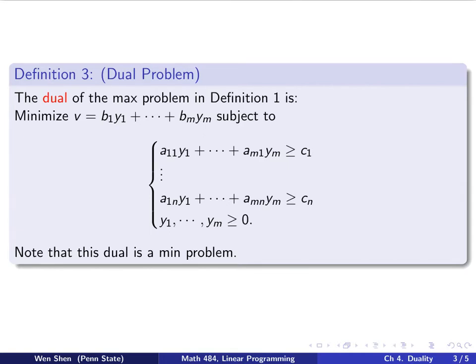We notice that the dual, this definition of the max problem, in the end becomes a min problem. This is in the min form.